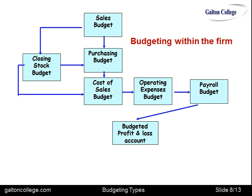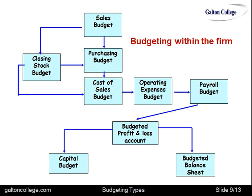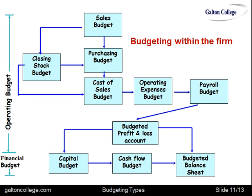So if we subtract one from the other, we would get a budgeted profit and loss account. And the budgeted profit and loss account can indicate the capital budget and also the budgeted balance sheet. So we are generating all of the accounts in terms of budgets from this. Up to this point we have the operating budget, and then we have the financial budget at the end — the capital budget, the cash flow, and the budgeted balance sheet.